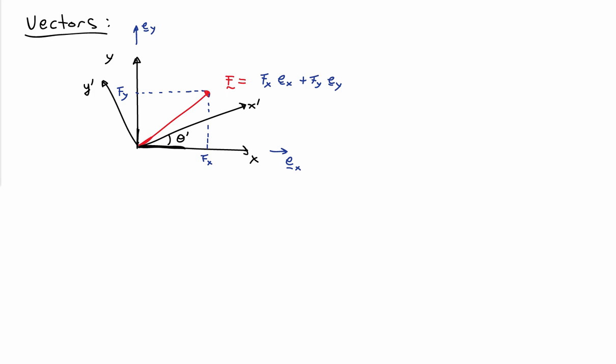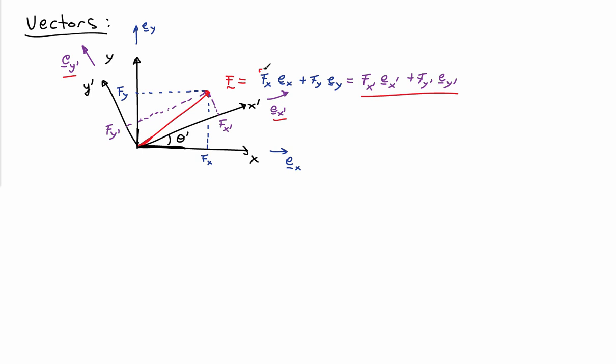Now let me introduce a second coordinate frame, X prime, Y prime, oriented with respect to the XY axes through some angle theta. In the second coordinate frame, I can also express the components of F by taking the orthogonal projections of vector F onto the X prime axis or onto the Y prime axis. This gives a second representation of the exact same vector: FX prime times EX prime, the unit vector in the X prime direction, and FY prime times EY prime. So I have two representations — one in the XY frame and one in the X prime, Y prime frame. The question of transformations is: given FX and FY, what are FX prime and FY prime, or vice versa?